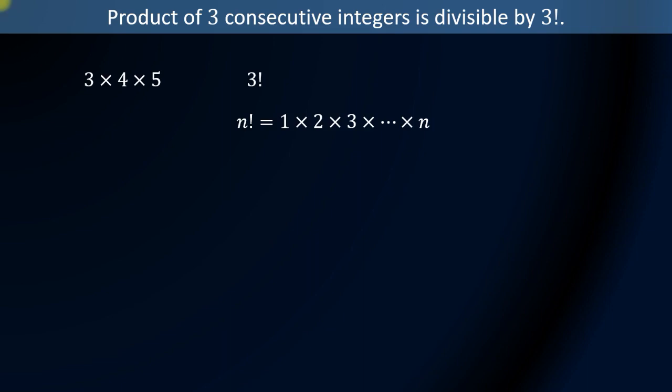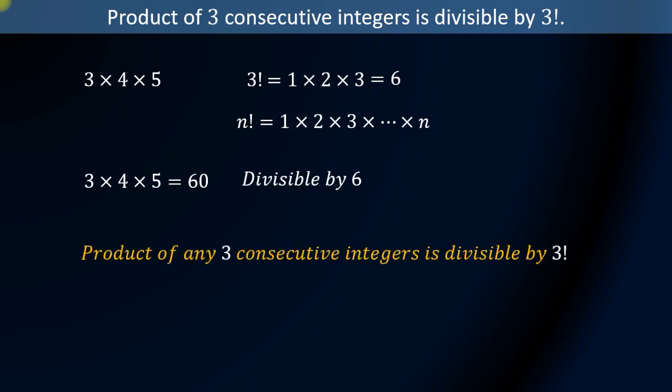Hence 3 factorial can be written as 1 times 2 times 3, which is equal to 6. So the theorem says 3 times 4 times 5, which is equal to 60, is divisible by 6. Now we can say that product of any three consecutive integers is divisible by 3 factorial, that is 6.